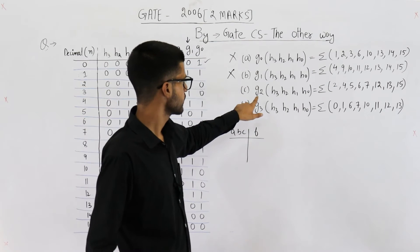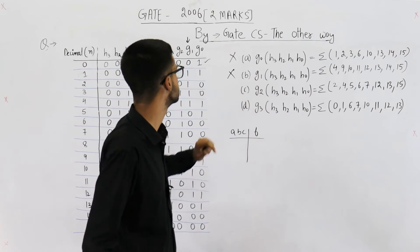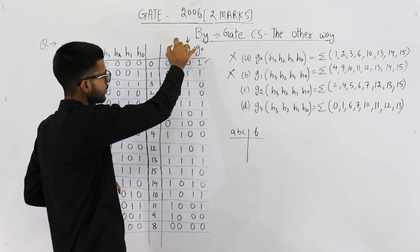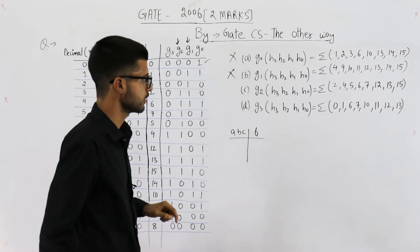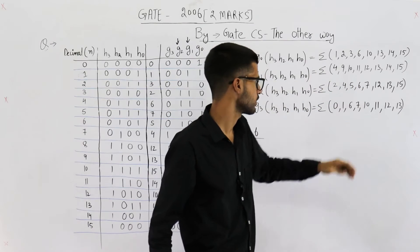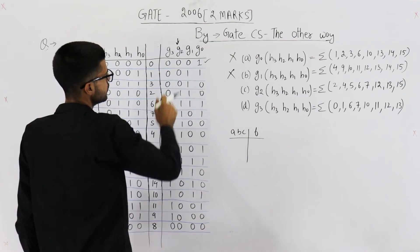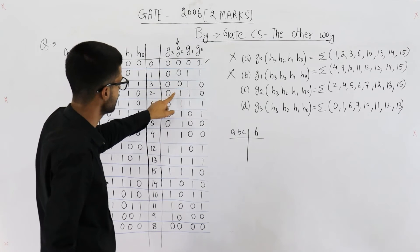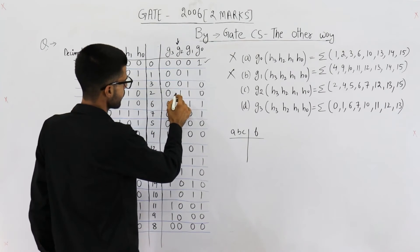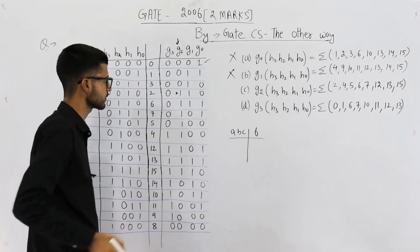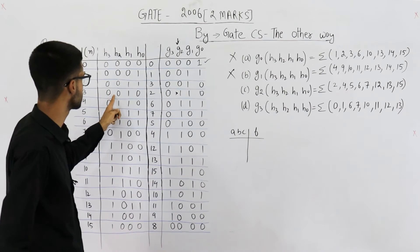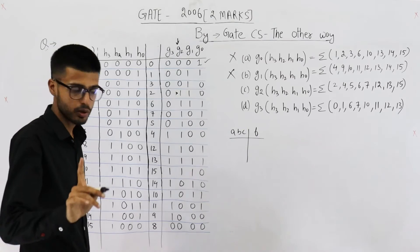Then there's this third function, which is g2. g2 outputs high on 2, 4, 5, 6, 7. Let's see that. Now I'm analyzing this g2. See the first high is on value 2. Here. This is correct. This is 0, 0, 1, 0. That means 2.